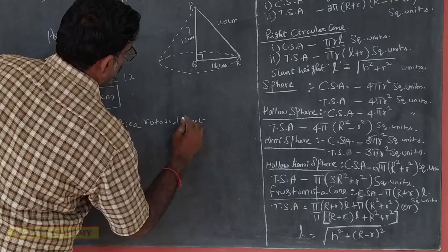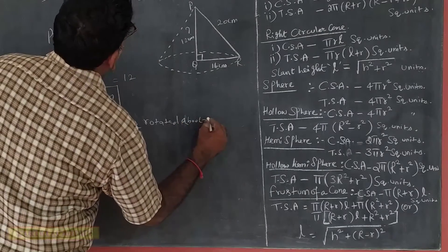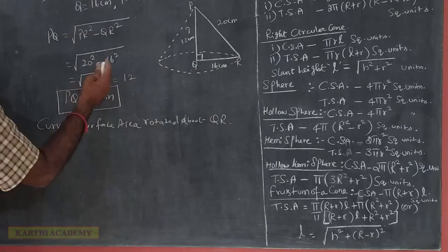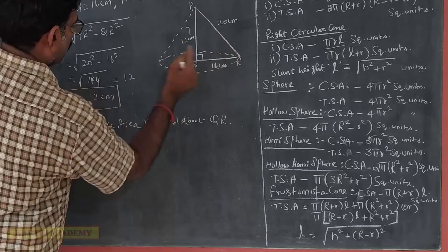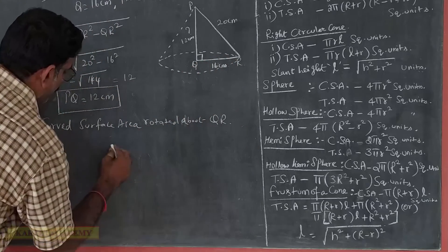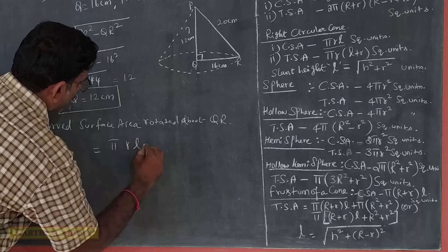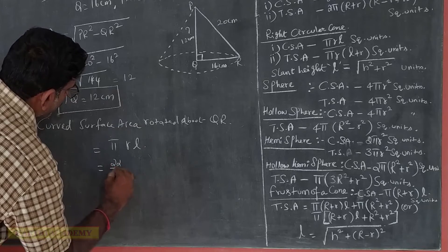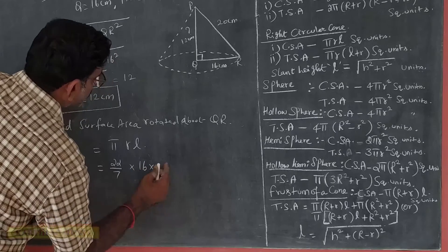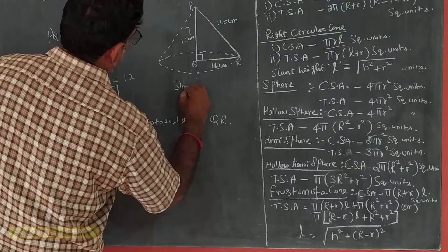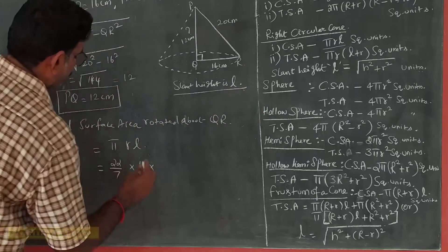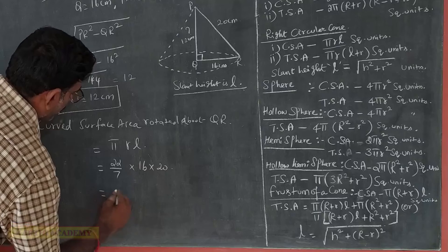Now, CSA rotated about QR. The curved surface area formula is CSA equals pi times r times l. Here r equals 16 cm and l is the slant height, which is equal to PR equals 20 cm. So CSA equals 22 divided by 7 times 16 times 20.